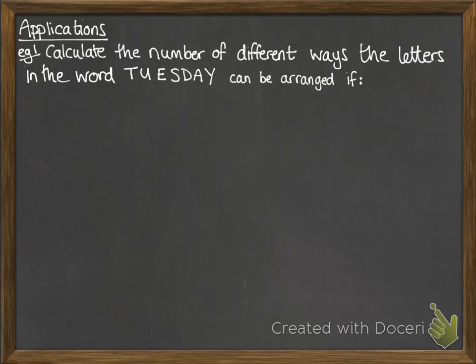We're going to look at applications of permutations, combinations and arrangements and see some typical questions that you could be asked. This first example is to calculate the number of different ways the letters in the word TUESDAY can be arranged.